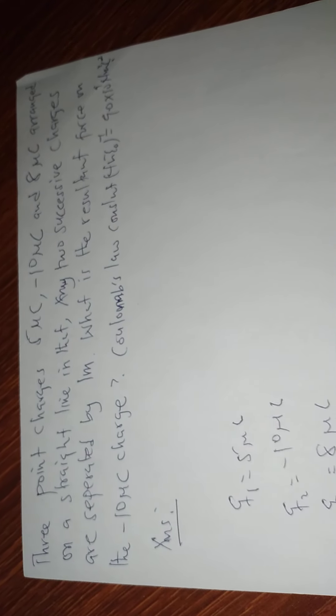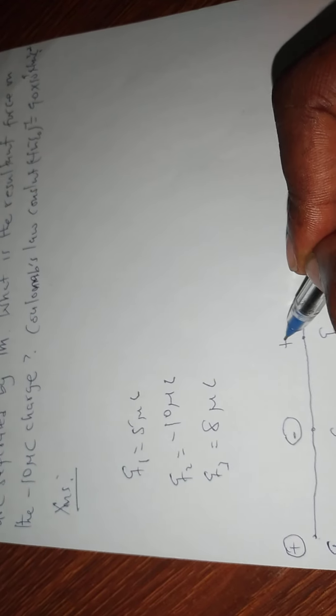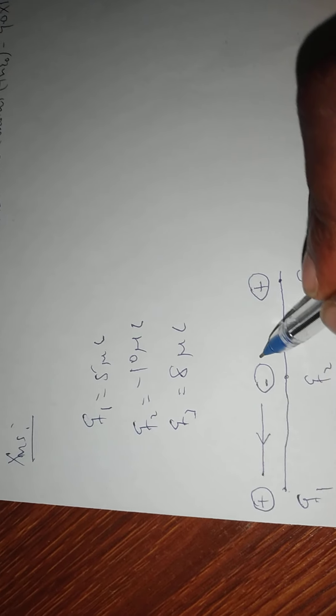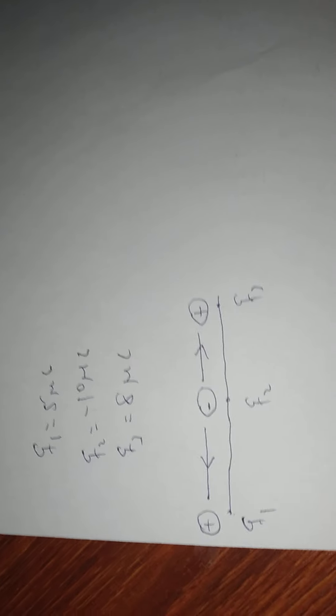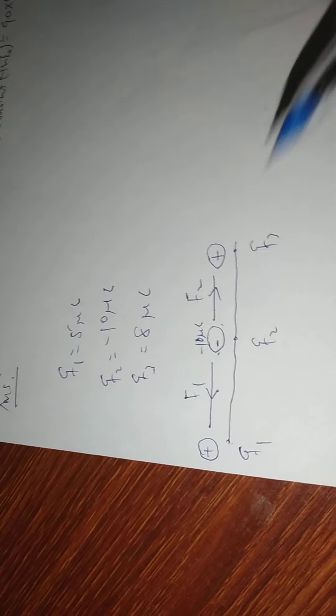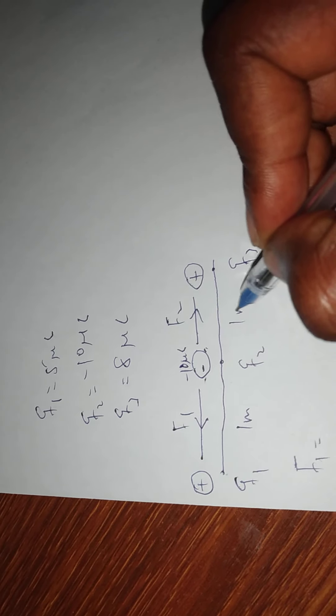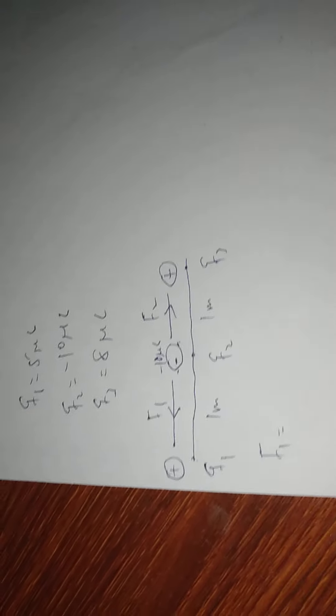I have a straight line, and this is Q1, Q2, and Q3. Q1 is positive, Q2 is negative, and Q3 is positive. What is happening here is that Q1 is exerting an attraction on Q2, and Q3 is also exerting an attraction on Q2. So if this is F1 and this is F2, then F1 is attracting Q2 toward Q1, and F2 is attracting Q2 toward Q3. The separation for each is 1 meter.